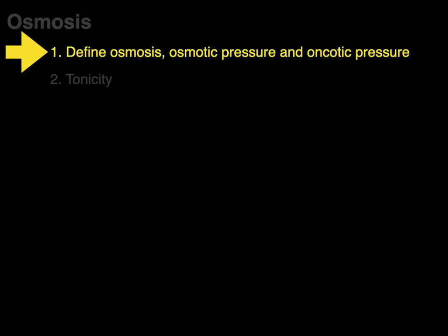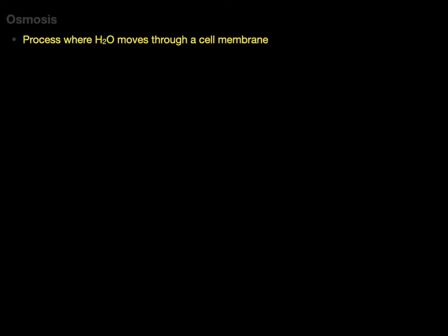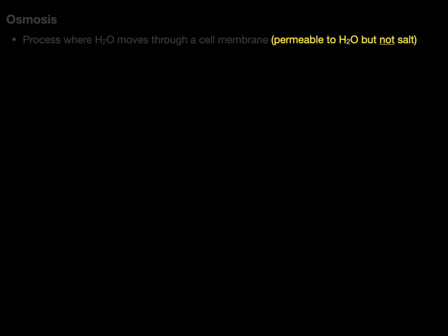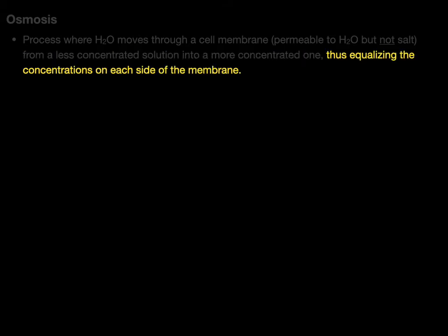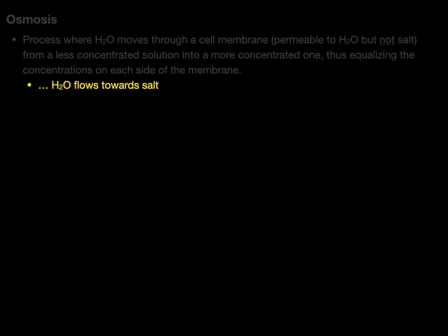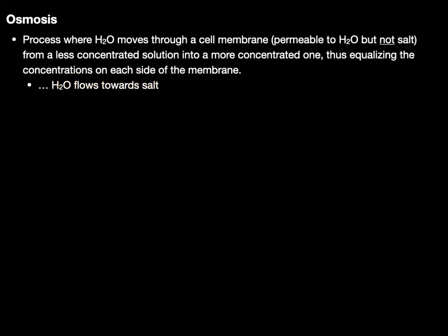First let's talk about osmosis, which is the process where water moves through a cell membrane that's permeable to water but not salts, from a less concentrated solution into a more concentrated one, thus equalizing the concentrations on each side of the membrane. Basically, water flowing towards the saltier side of the membrane.